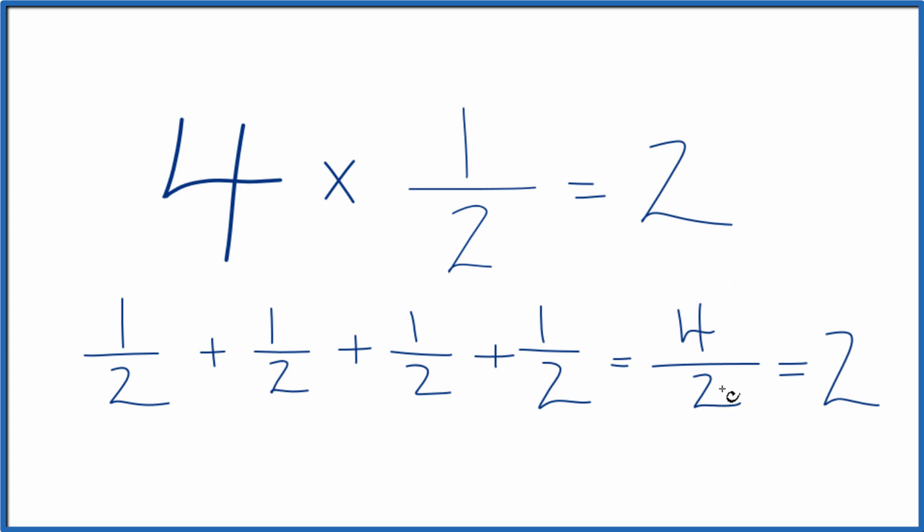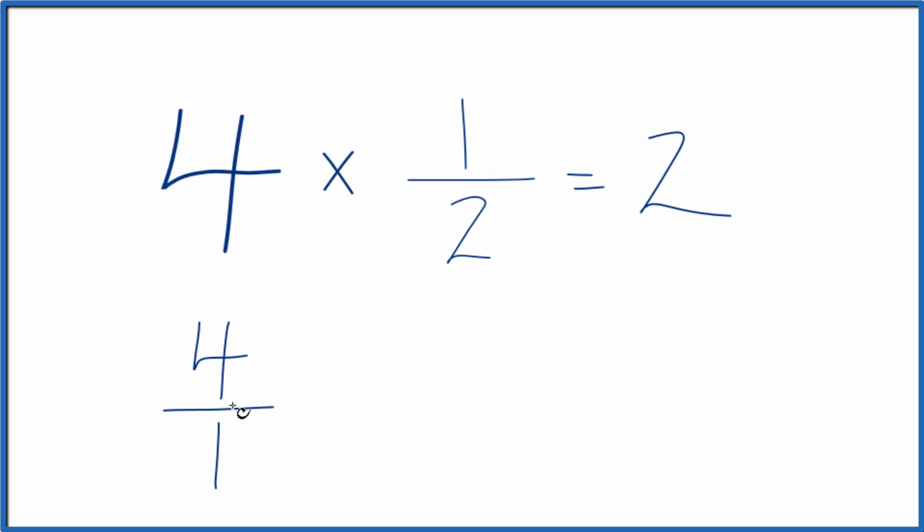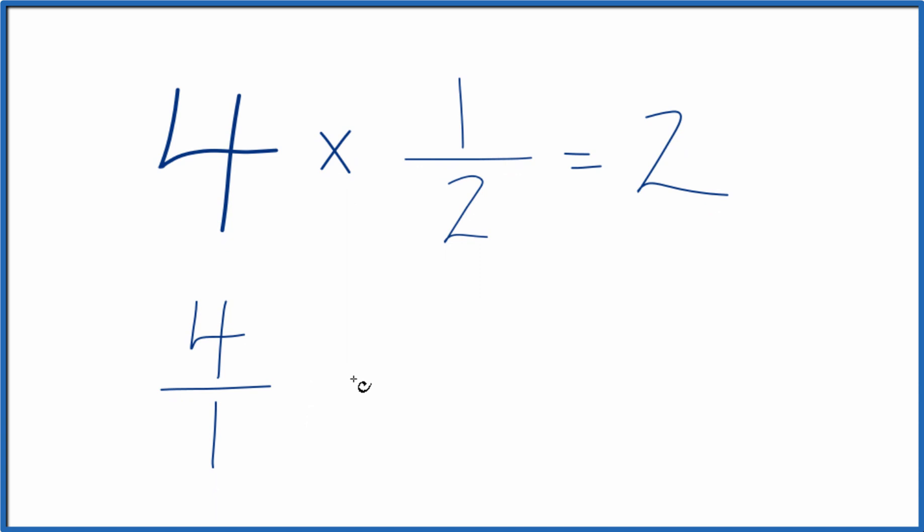There's another way to do it. It might be a bit easier. We could just say that four is the same as four over one. We're just dividing by one. It's still four, but now we have a fraction.